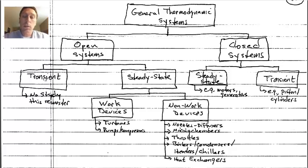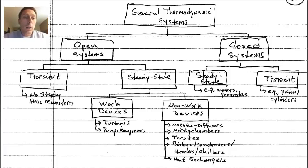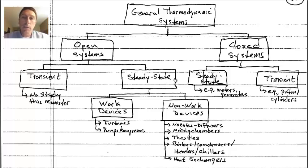We can further decompose each system type by the process it undergoes. An open system can undergo a transient process, where system properties change with time, or a steady-state process, where properties do not change with time. The transient open system is more complex and we don't study it this semester. For the steady-state case, however, we can decompose further.